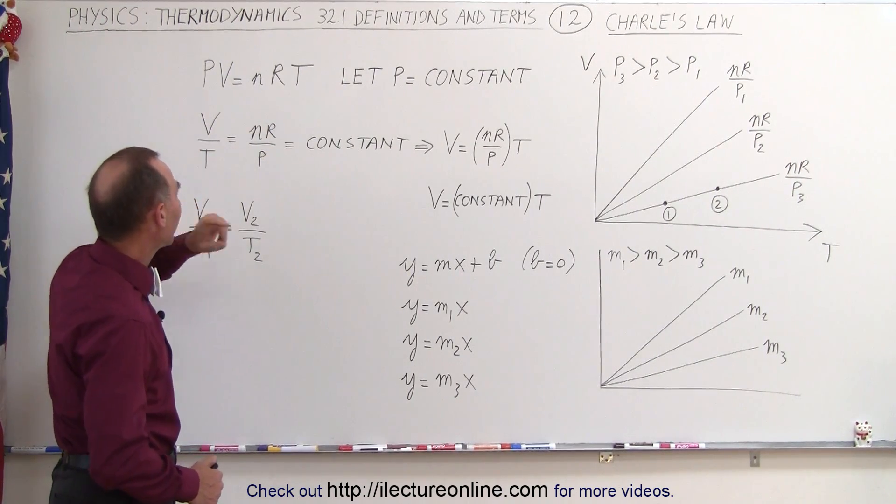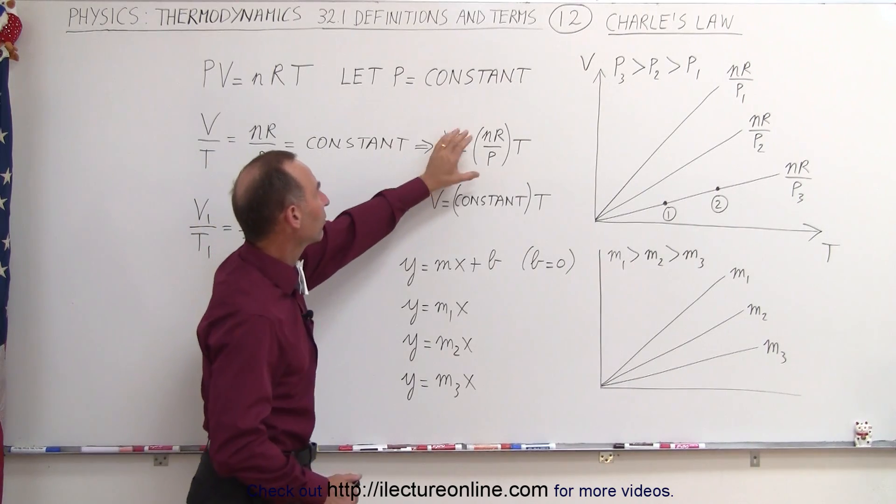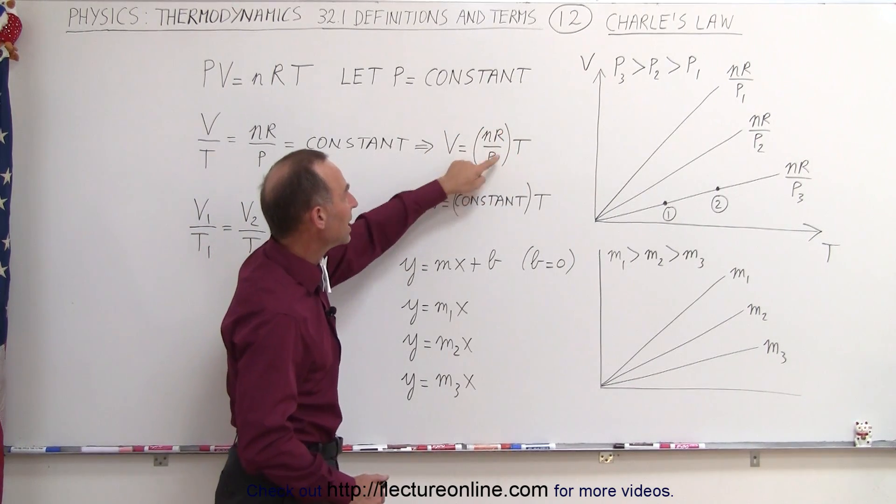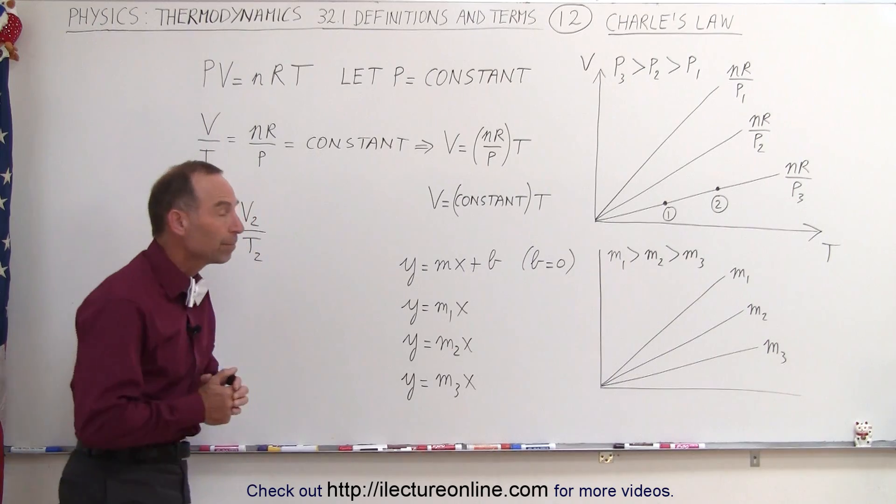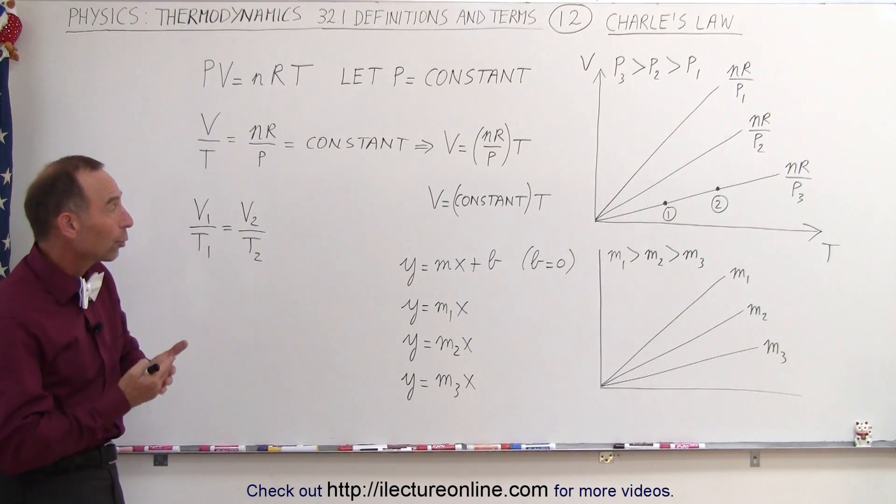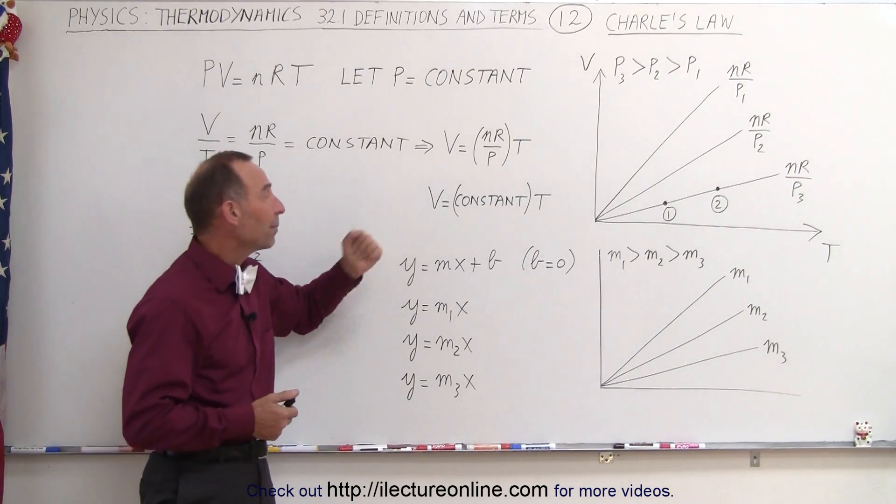So we can then say that V can be written as the constant times T, the constant being NR divided by P. Now again, we have our linear equation that looks a lot like Y equals MX plus B.